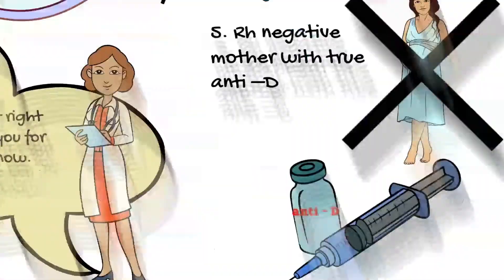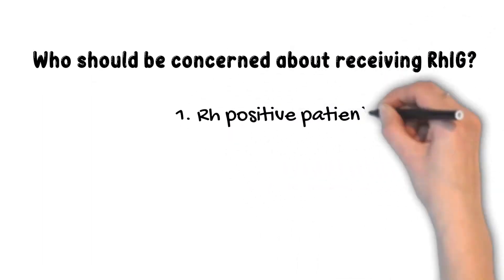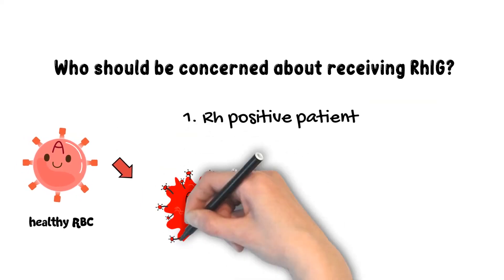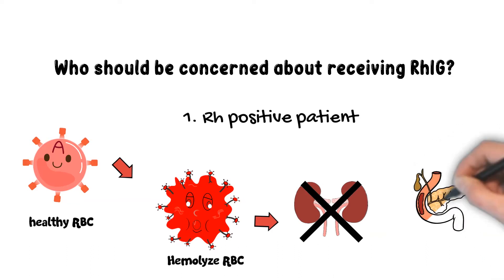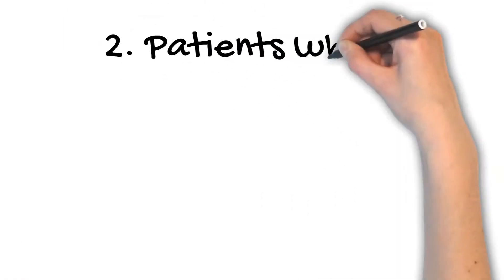Who should be concerned about receiving RHIG? RHIG can cause intravascular hemolysis in RH positive patients, which can lead to anemia and multiple system organ failure. Patients who have history of allergic reaction to RHIG.